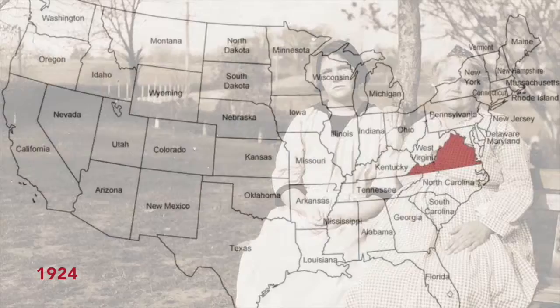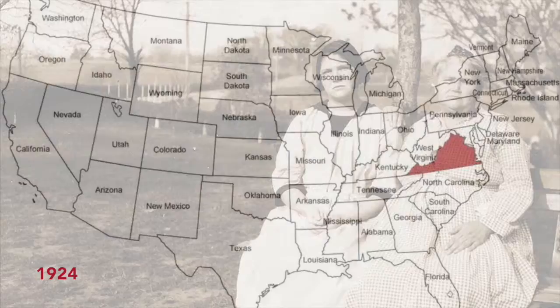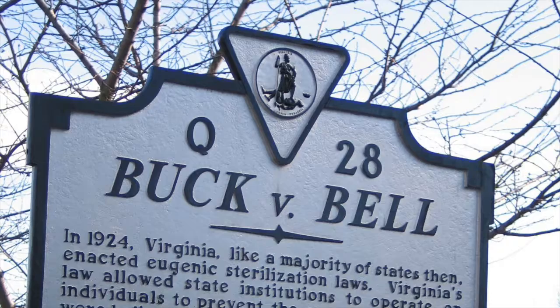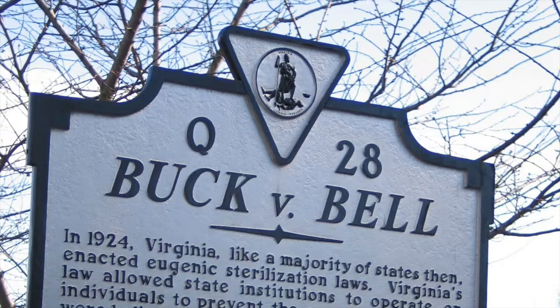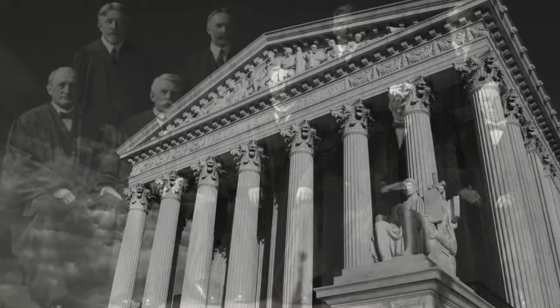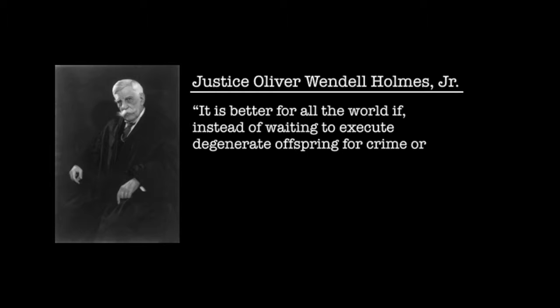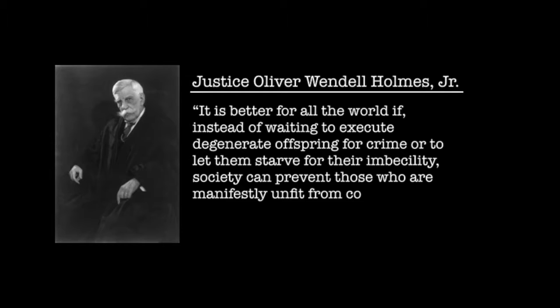Perhaps the most significant of these early state eugenics programs was in Virginia. In 1924, a young woman named Carrie Buck was deemed feeble-minded by the Virginia state government and admitted for an involuntary tubal ligation after being told that her operation was an appendectomy. In 1927, a conflict arose over the legality of involuntary sterilization. In an 8-to-1 decision, the Supreme Court upheld the Virginia law allowing forced sterilization, establishing it as a constitutional practice. In the Buck v. Bell majority opinion, Justice Oliver Wendell Holmes said: 'It is better for all the world if, instead of waiting to execute degenerate offspring for crime or to let them starve for their imbecility, society can prevent those who are manifestly unfit from continuing their kind. Three generations of imbeciles are enough.'